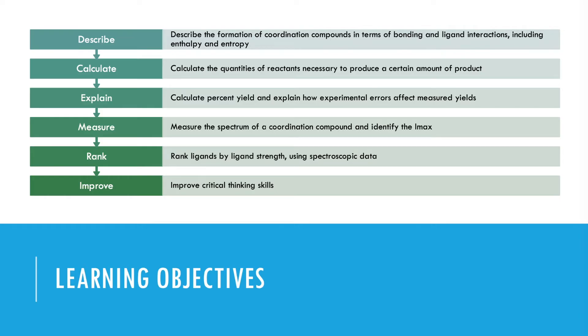First, describing the formation of coordination compounds in terms of the bonding that happens and how ligands interact with the metal ions. Calculating quantities of reactants necessary to produce a certain amount of product, so like stoichiometry, and also calculating percent yield and potentially discussing the way experimental errors might affect the measured yield.